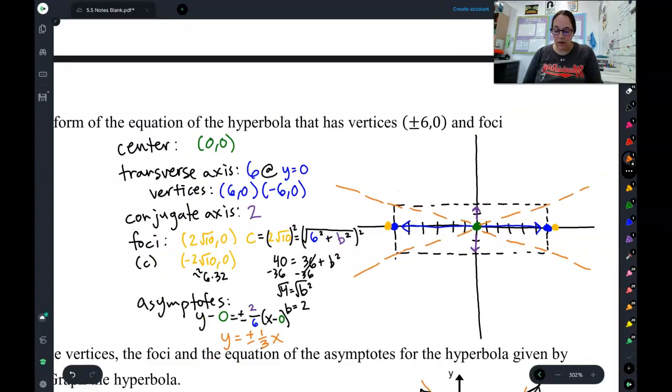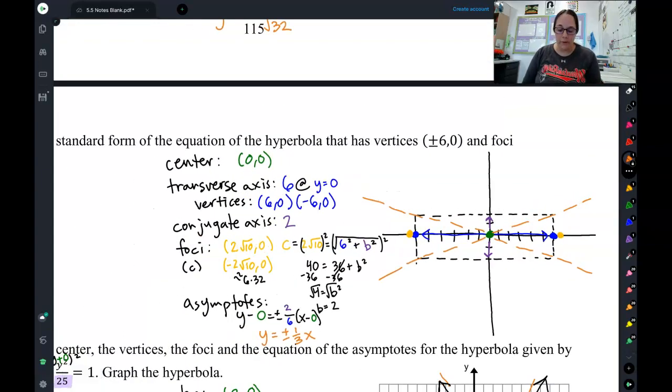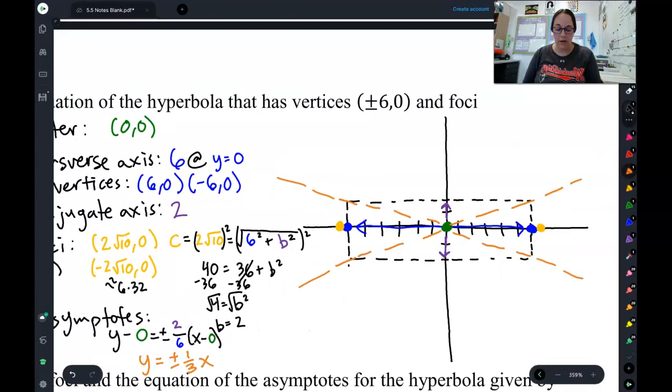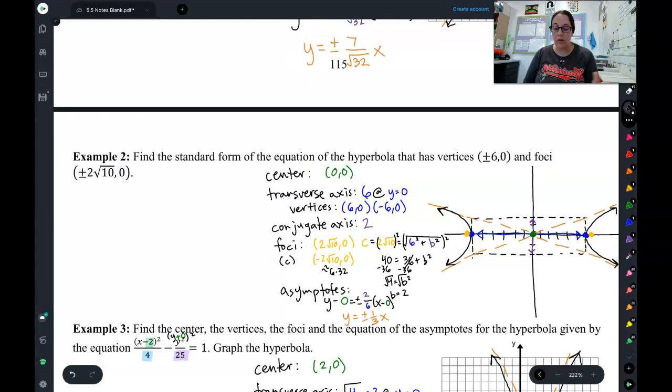So, now that I actually know all the information I need to, I can actually graph this hyperbola. I have to go through the vertices and follow the asymptotes. Through the vertices, follow the asymptotes. And there's my hyperbolas.